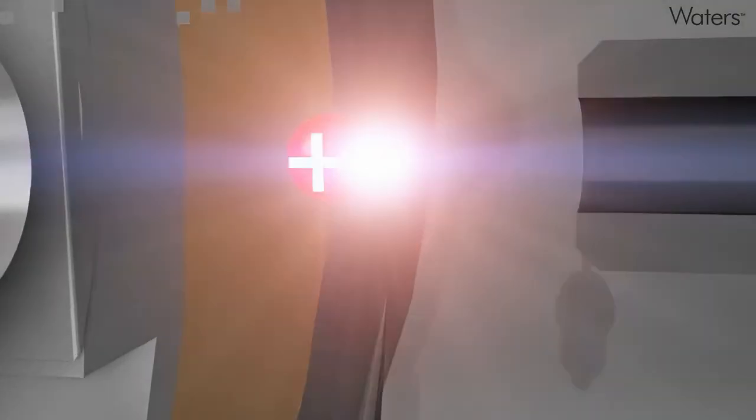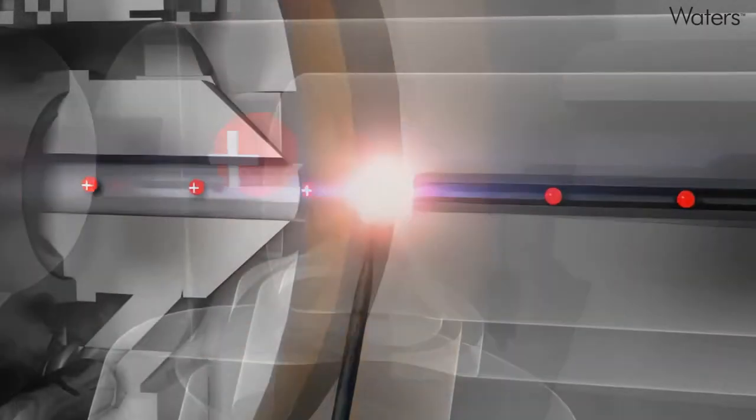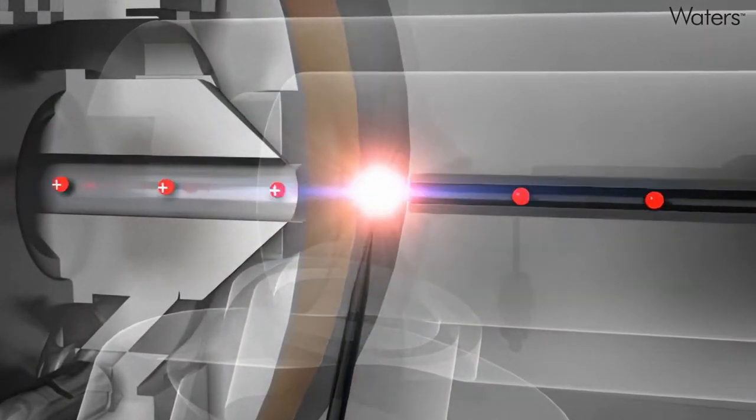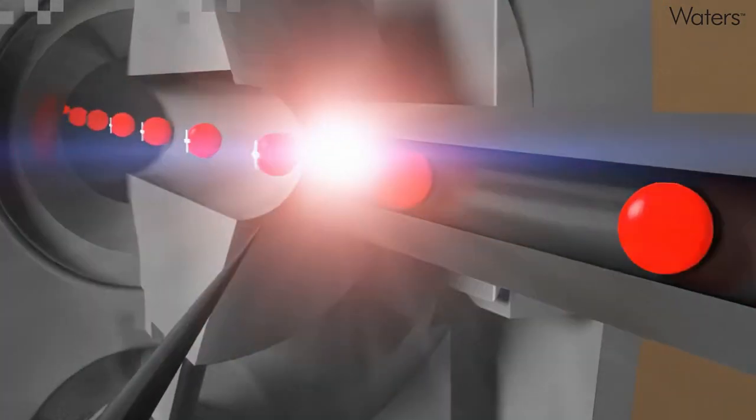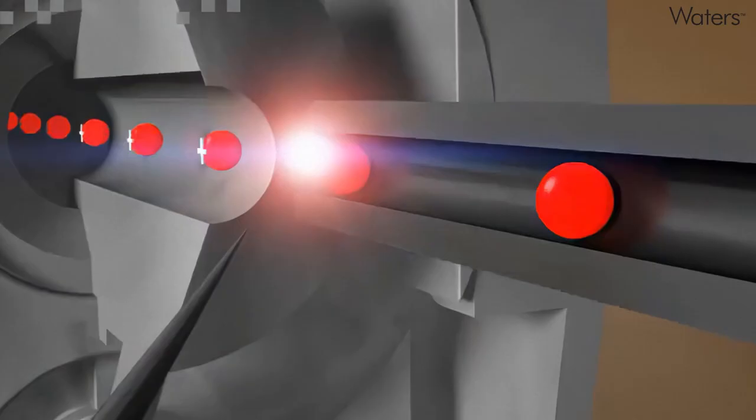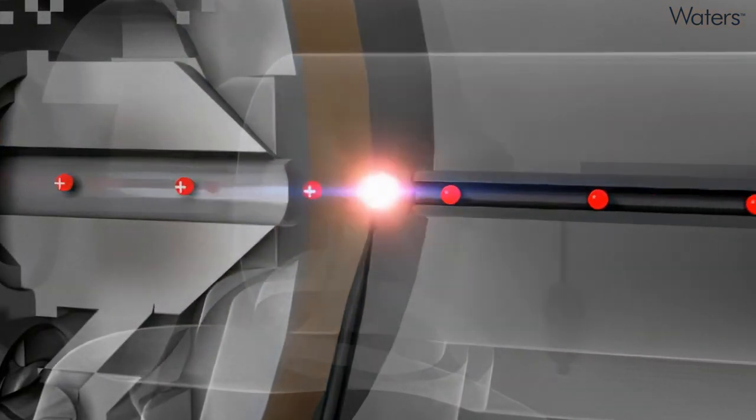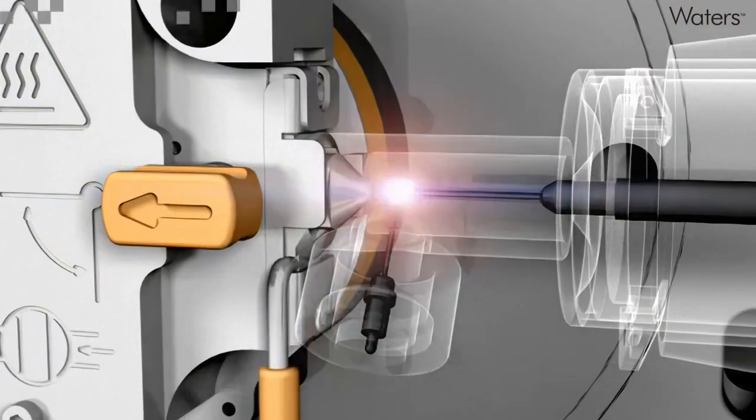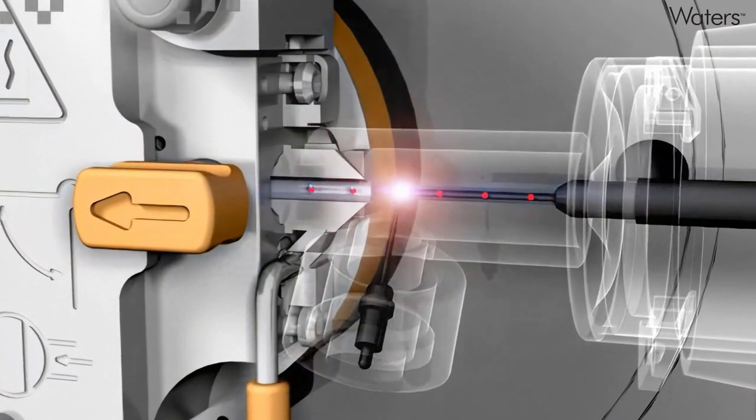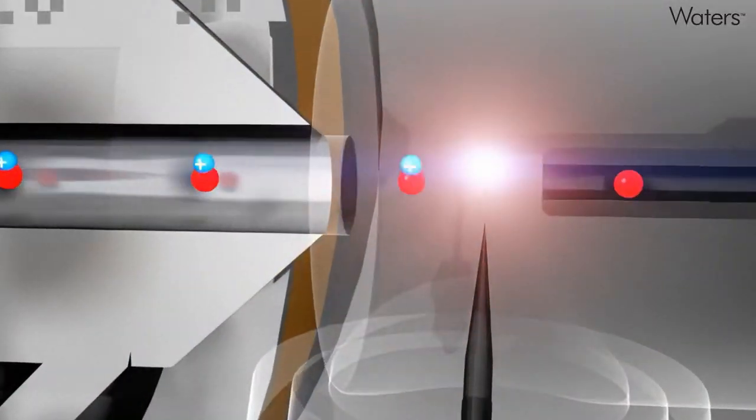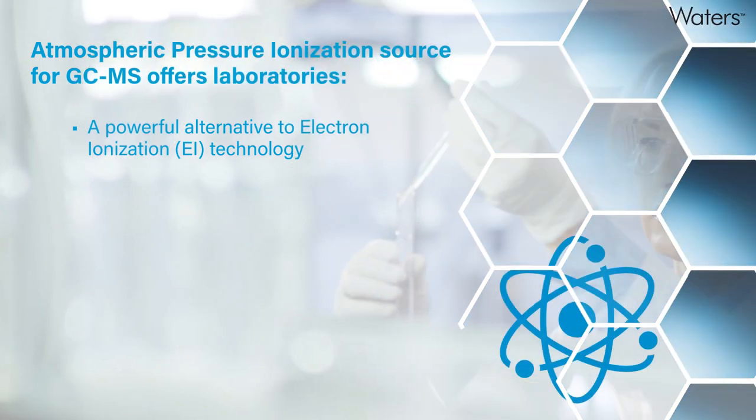APGC ionization is soft, which minimizes compound fragmentation, and results in an enhanced abundance of molecular ions compared to electron ionization. Ionization can be controlled in favor of charge transfer, which generates M-plus ions, or with addition of reagents such as water or methanol, protonation to M-plus H.